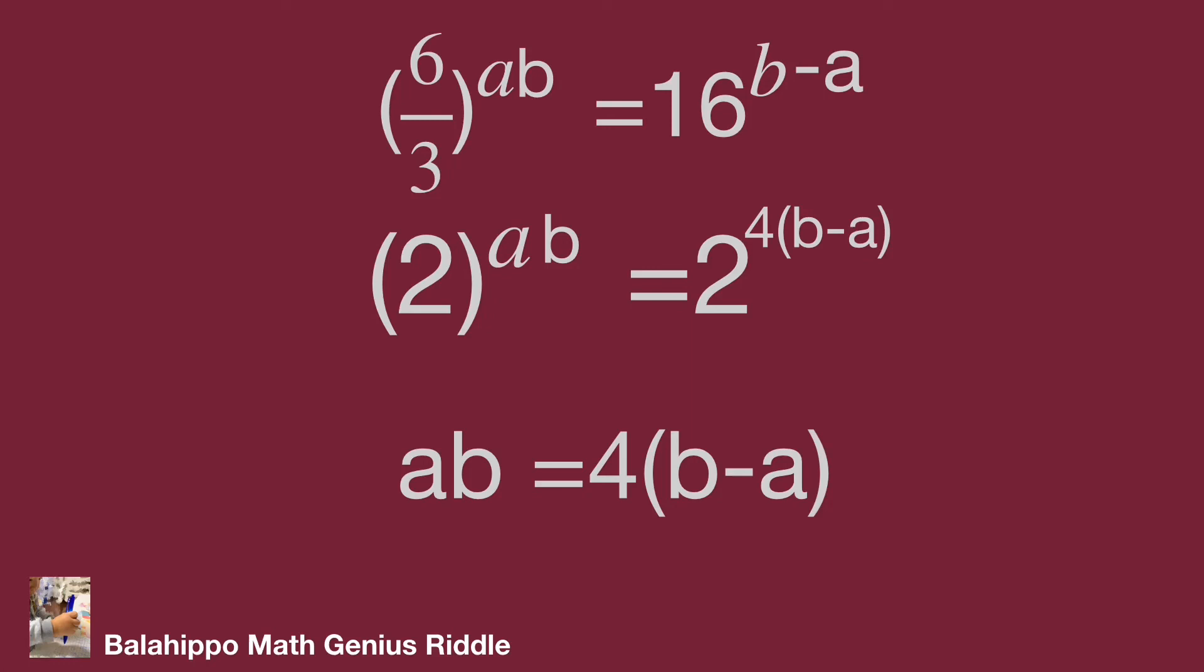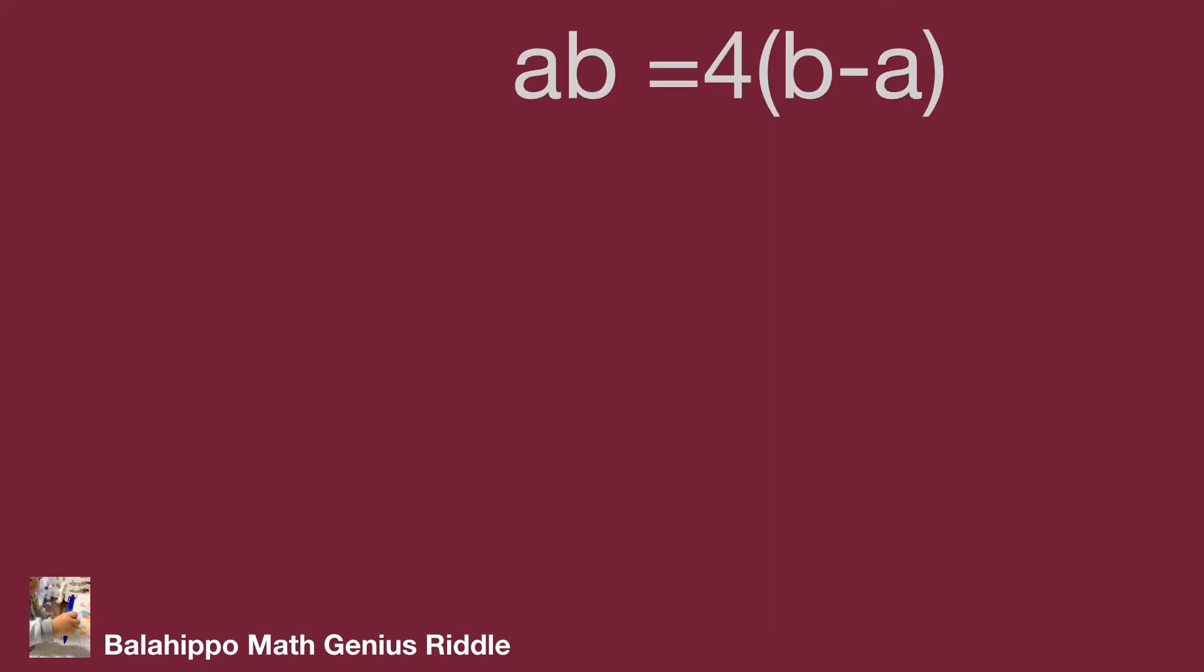So, ab equal to 4 multiplied by bracket b minus a bracket. Adopt the equation as 1 over a minus 1 over b equal to a minus b over ab. Substitute ab by 4 multiplied by bracket b minus a bracket. Eliminate a minus b in these fractions. The value becomes minus 1 over 4. That's the answer.